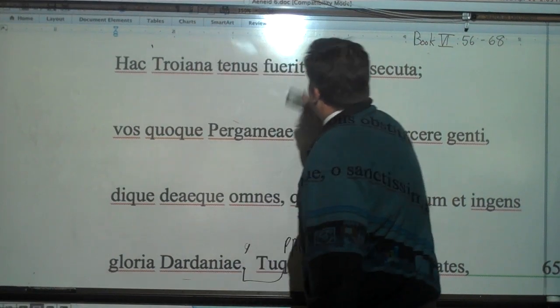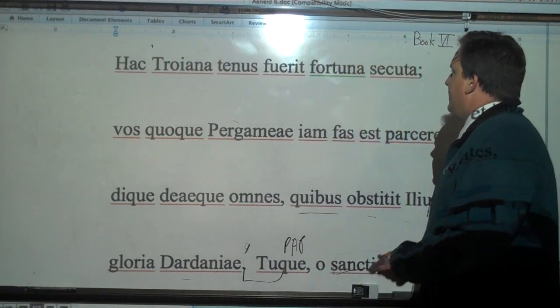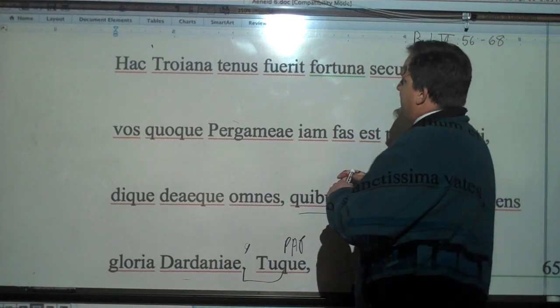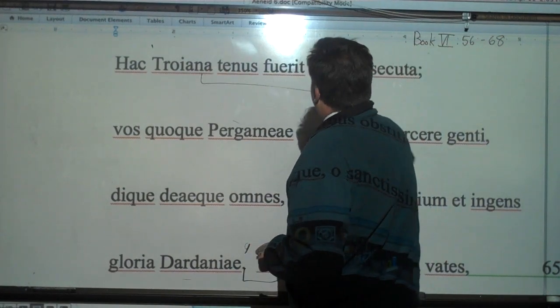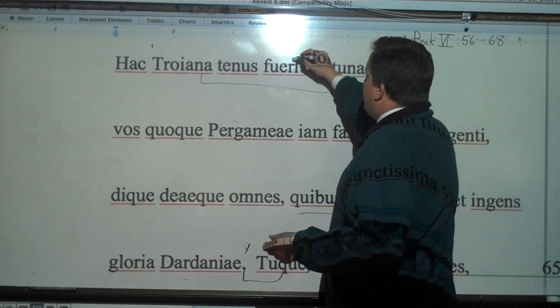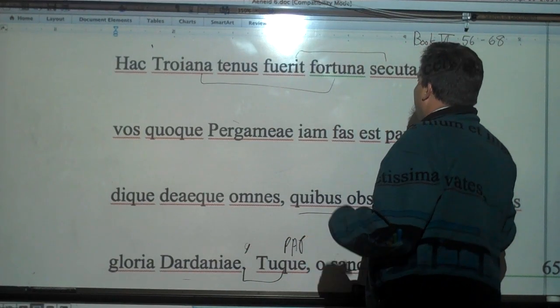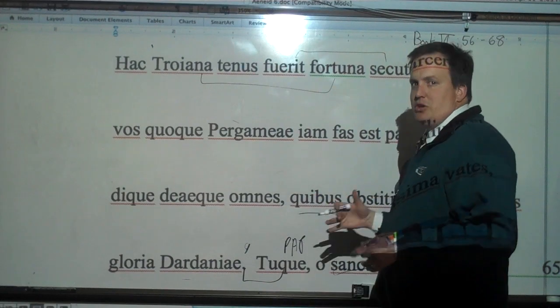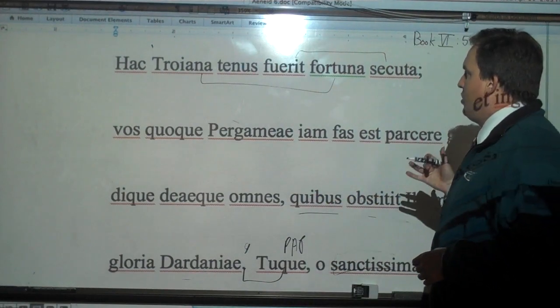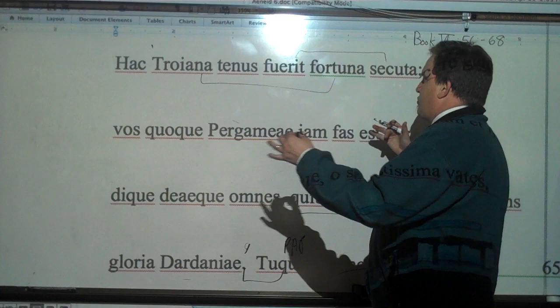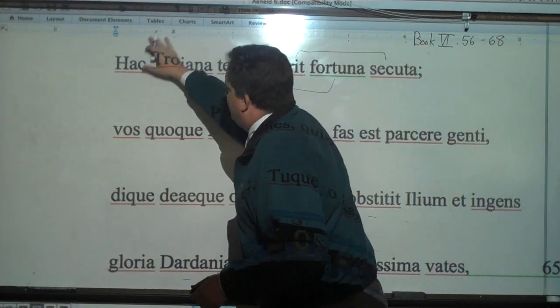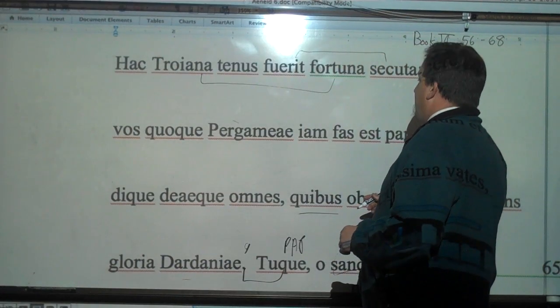So hac Troiana tenus fuerit fortuna secuta. Let, let the Trojan fortune follow. This is subjunctive, and it's perfect subjunctive. It's a weird subjunctive. It's really a jussive, so it works like a jussive. So let Trojan fortune follow straight away hac tenus, with this.